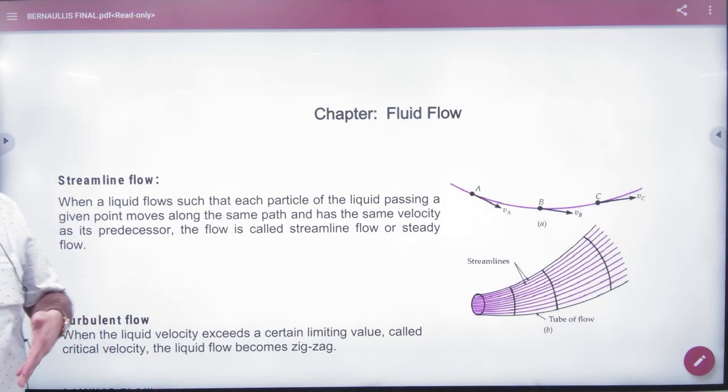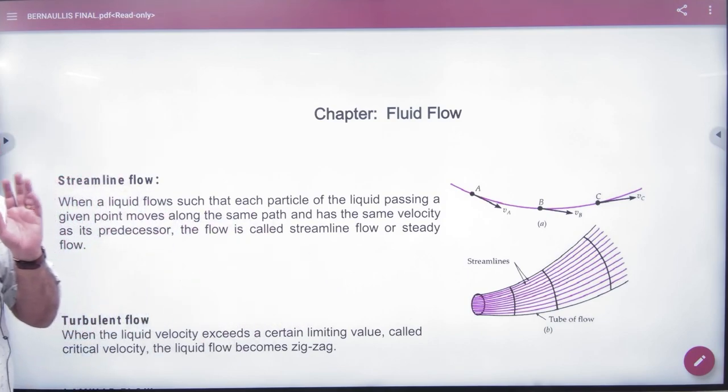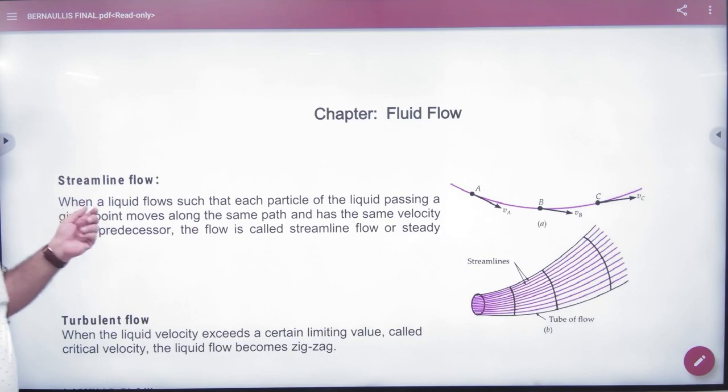When a liquid moves in a tube or in a pipe, it moves in two ways. First, when the flow is streamlined and second, when the flow is turbulent.